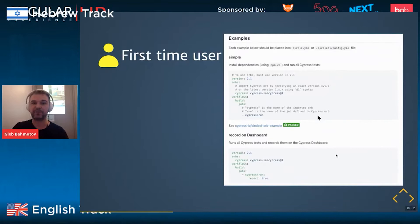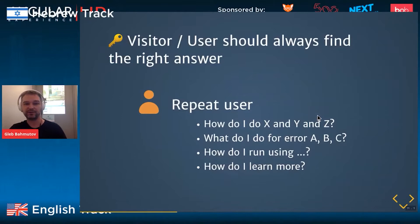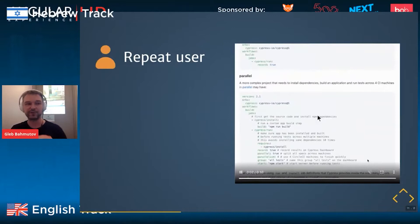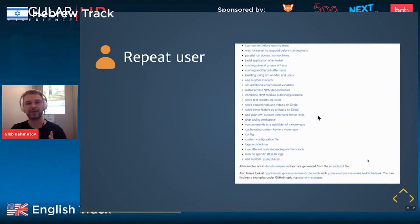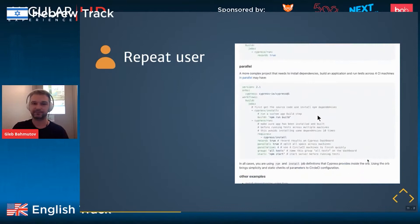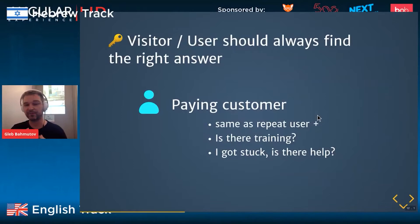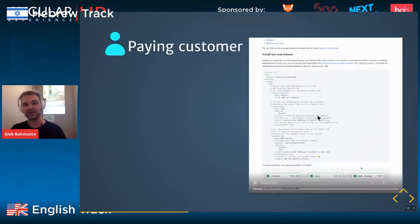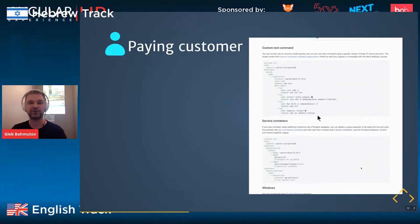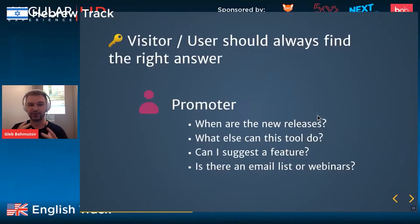A repeat user wants to do more — handle errors, run the tool on some platform. For repeat users, we put links rather than inline examples, creating as many examples as possible so users can find and go to them. A paying customer wants the same as a repeat user but also paid support, training, and to know what happens if they get stuck. For those, we create recipes with larger real-world examples. And finally, promoters — your champions — want to know about new releases, feature suggestions, and webinars.